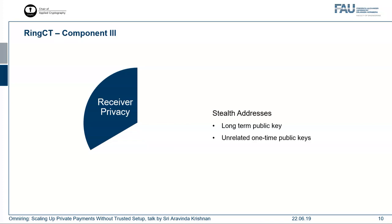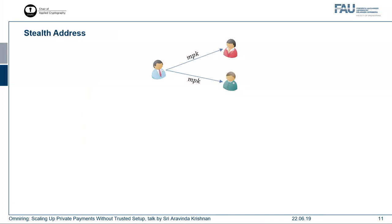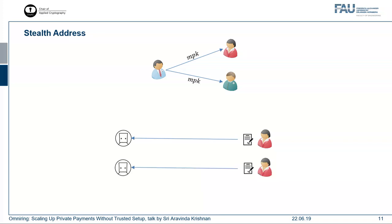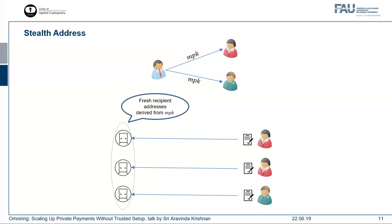The third component is receiver privacy, achieved through what is called stealth addresses. The user who wants to receive money sends his long-term address — the master public key — to other users. The sender signs some money and sends it to recipients whose addresses are derived from this master public key, but the adversary doesn't know this. The adversary cannot determine that all these fresh-looking recipient addresses belong to the same user. In this way, the recipient addresses are unlinkable from each other.